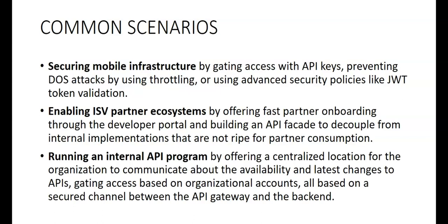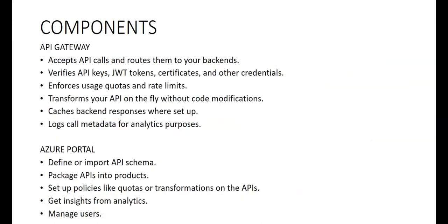The API Gateway is a key component of API Management. It accepts API calls and routes them to your backend. It verifies API keys, JWT tokens, certificates, and other credentials. It enforces usage quotas and rate limits, transforms your API on the fly without code modifications, caches backend responses where set up, and logs call metadata for analytics purposes.